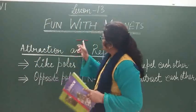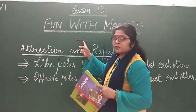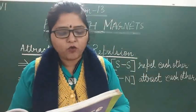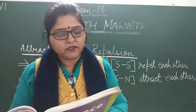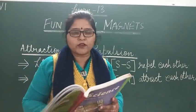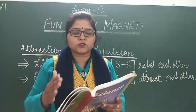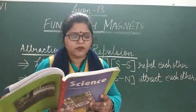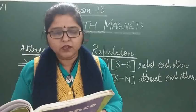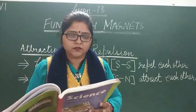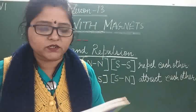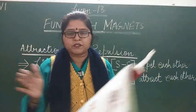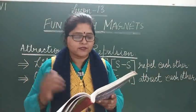In car A, keep the south pole of the magnet towards its front. In car B, keep the north pole towards its front. Now place the two cars close to one another. Do the cars remain at their places, or do they move towards each other and collide?